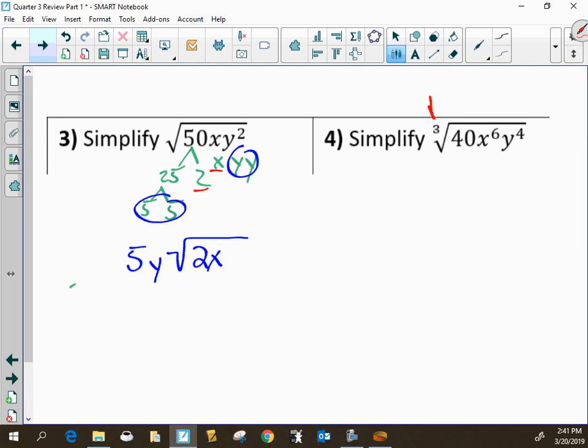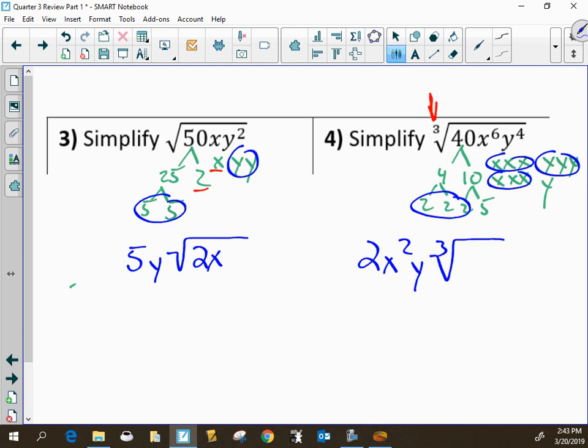This one's different because it's a cube root. And so for this one, instead of looking for groups of 2, we're looking for groups of 3. So we do the same thing for the factor tree, which is 4 and 10 and 2 and 2. But instead of looking for groups of 2, we're now looking for groups of 3. And so we'll get 2x squared y times the cube root of 5y. And the most common mistake students make is they forget to write the index, and they say it's the square root of 5y instead of the cube root of 5y.